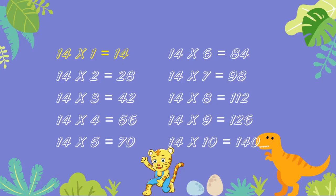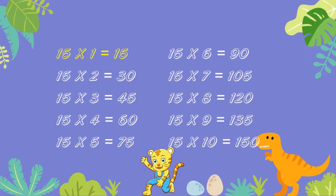14 ones are 14. 14 twos are 28. 14 threes are 42. 14 fours are 56. 14 fives are 70. 14 sixes are 84. 14 sevens are 98. 14 eights are 112. 14 nines are 126. 14 tens are 140.